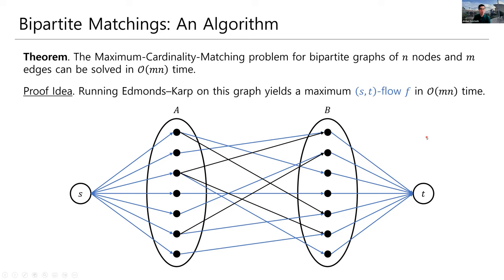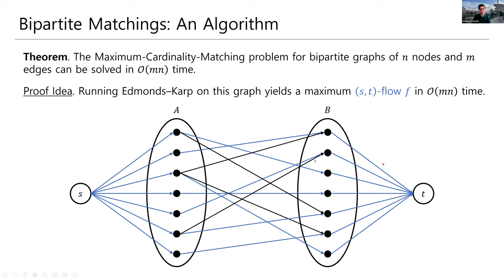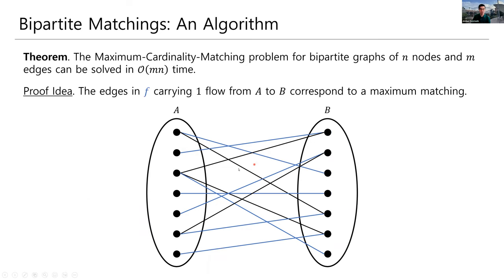The last thing we have to do is get our matching out of this. Well, all you do is you just chop off S and T. They weren't part of the original graph anyway. And, we say that the matching that is maximum in the original graph is equal to, when we looked at the flow, it's all those edges that were carrying flow one from A to B. So, going back one step, you see those are the edges that were included in the flow. We just take their undirected versions to obtain the maximum matching.